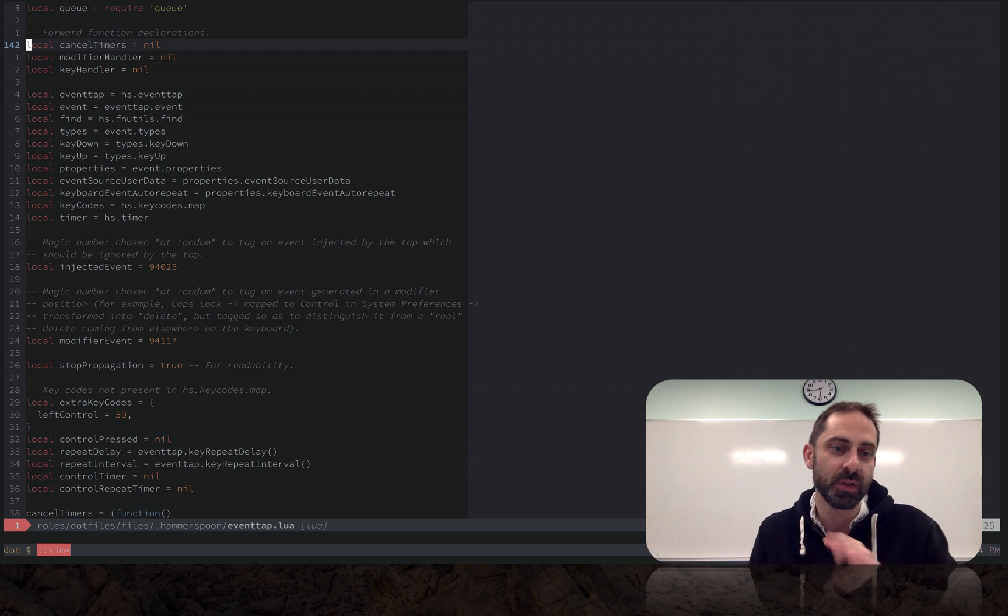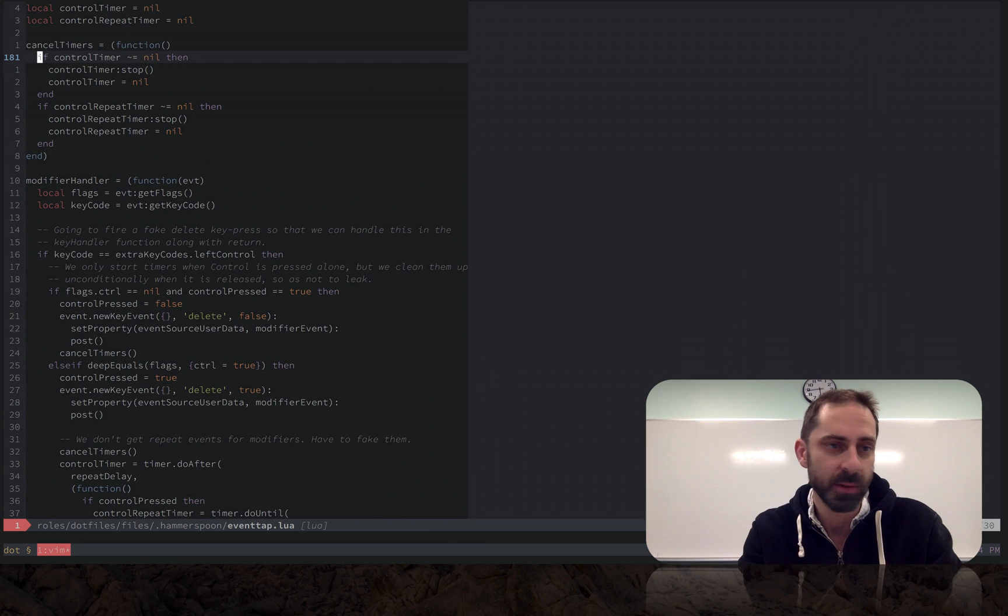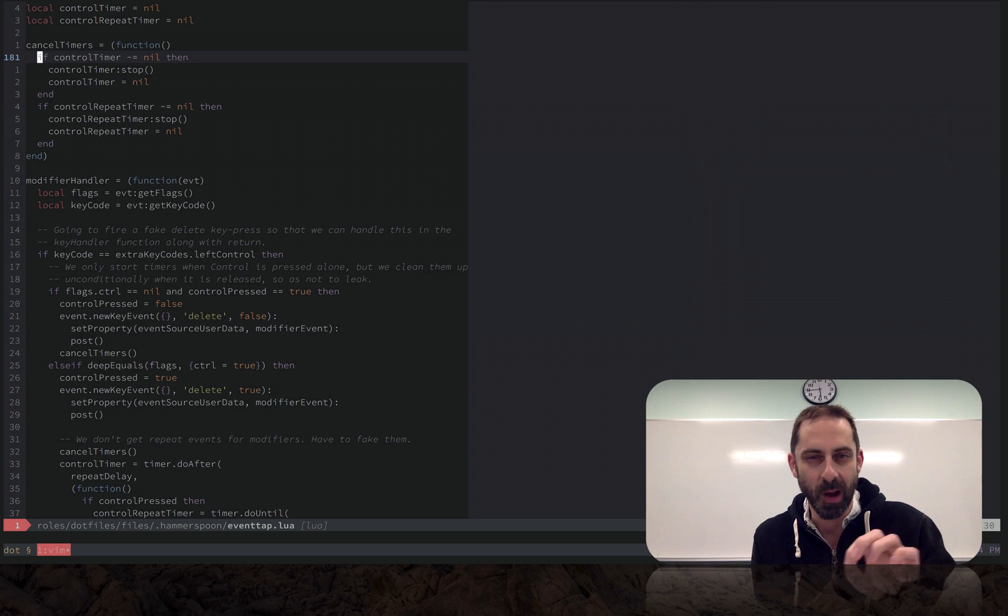I'm going to look at three pieces of functionality in this screencast. The first one is something that I talked about when I was discussing folding, and that is the desire to map the tab key to toggle folds. Now the trouble with mapping the tab key is that in the terminal when you hit tab it actually sends control I to the terminal.